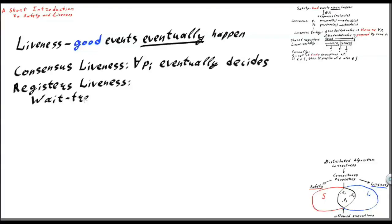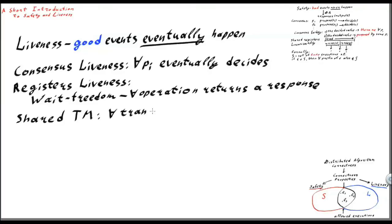In the case of shared registers, an example of liveness property is wait freedom, which states that every operation should eventually return a response. Or in the case of shared transactional memory systems, a liveness property might state that every transaction should eventually commit.